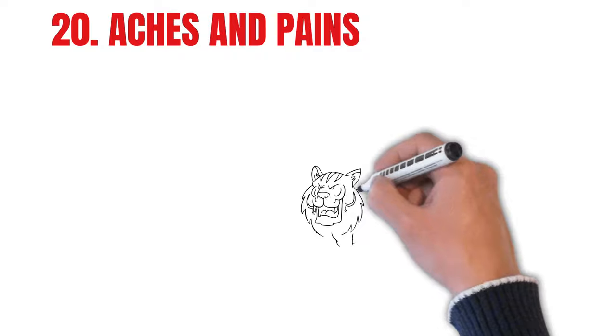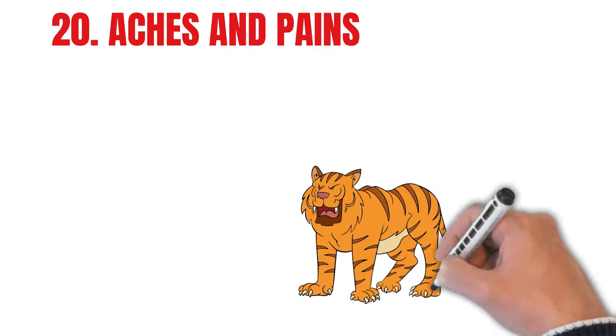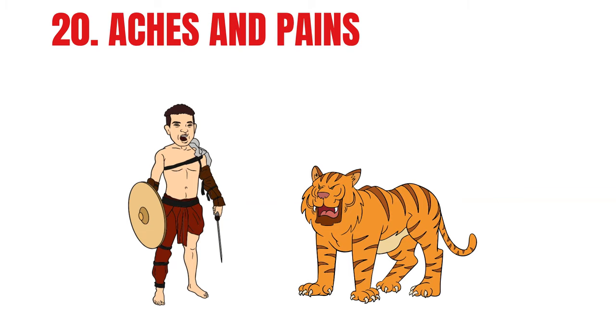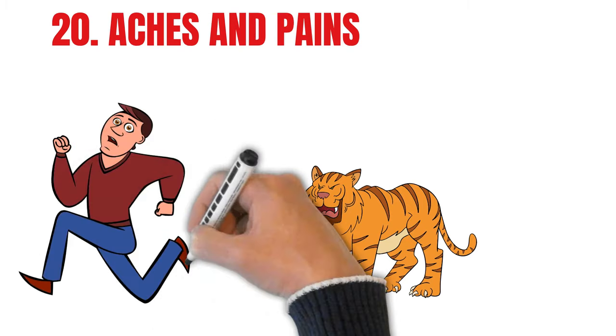Twenty, aches and pains. If you suffer anxiety every day, it's like your body is fighting a tiger every day, or running for its life. So it's not surprising that aches and pains can appear pretty much anywhere.